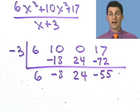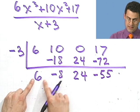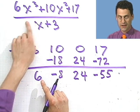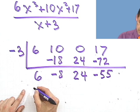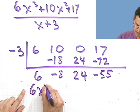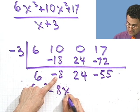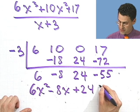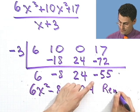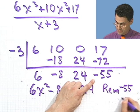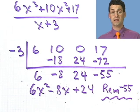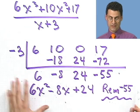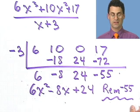So that's the answer. How do you decode it? Since I'm dividing an x cubed by an x, the quotient starts with x squared. So I get 6x squared minus 8x plus 24, and the remainder is minus 55. That's a neat way of doing all that complicated long division just by using the synthetic division technique.